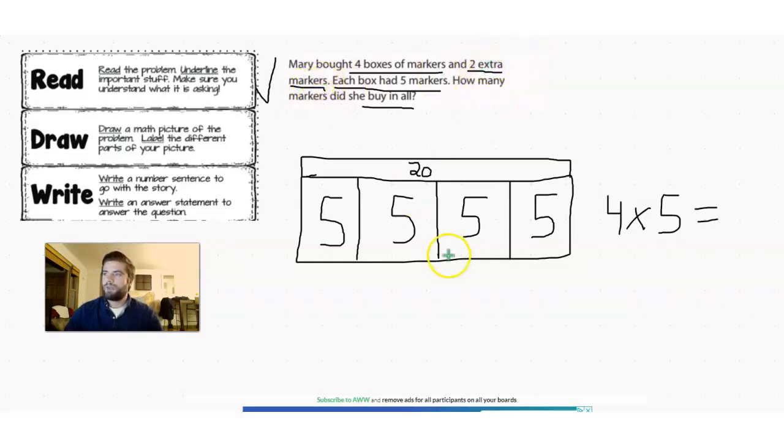Yeah, we have to add those two extra markers. And for this one we don't really need to draw another picture. We can just add two extra markers to our group of 20 that we already have. 20 plus 2 equals 22.